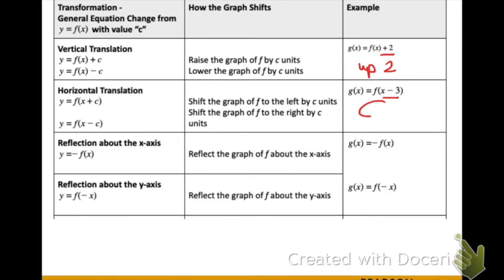Similarly, if we want to shift the graph left or right horizontally, this means we will add or subtract a number inside the parentheses, or inside the function, just working with the x values. We'll be shifting the graph right 3 because it is a minus 3 on the inside. A plus 3 would have moved the graph left.